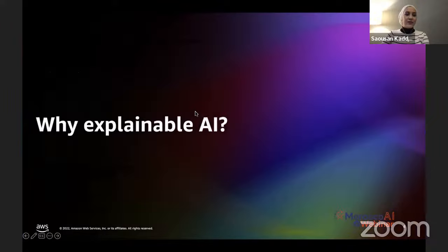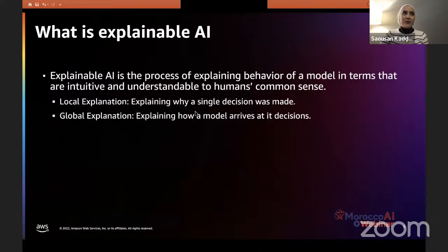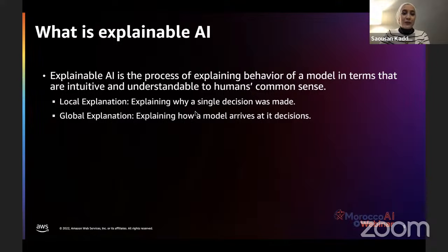Why explainable AI? Explainability is the process of being able to understand and explain in very plain words how a machine learning model is behaving in a way that is intuitive and understandable to humans. We have two types of explanations: local explanations, which explain why a single decision was made, and global explanations, which explain how the model overall is behaving and how it arrives at its decisions.